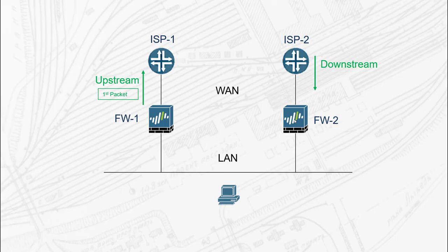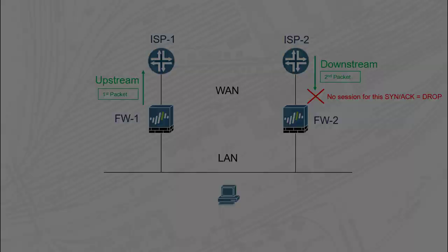Why? Because they need to keep track of sessions and will drop packets if there is inconsistency in the TCP exchange — like we see in the picture here, where there is an asymmetry and the returning packet from the server to the client is going to be dropped by firewall number 2.